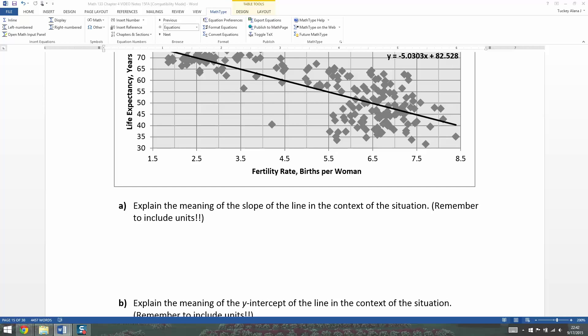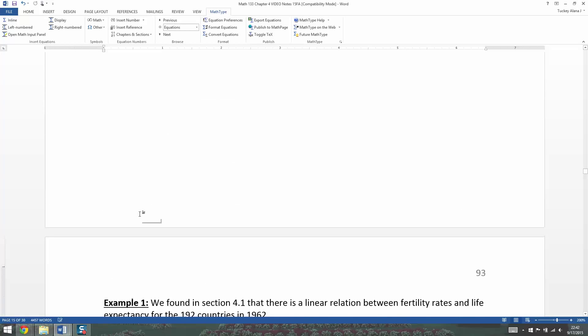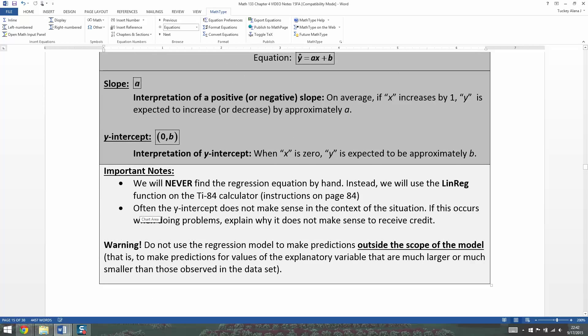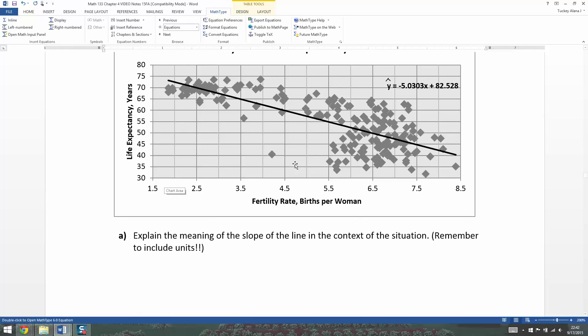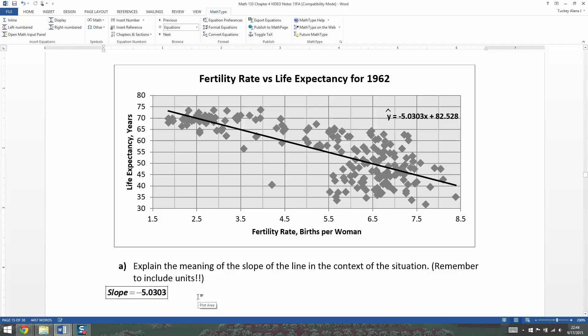We're going to explain the meaning of the slope of the line in the context of the situation. So first, let's start off with what is the slope. Slope is a, and that's the one that's multiplied by x. So when you look at this equation, the slope is negative 5.0303. There we have it.